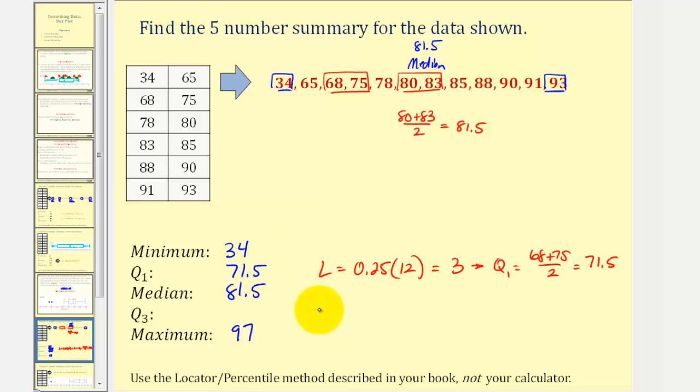And now for Q3, we'll have L equals 0.75 times 12, which is equal to 9. So to find Q3, because L is a whole number, we'll take the average of the values in the ninth and tenth positions, which would be 88 and 90. So Q3 equals 88 plus 90 divided by 2, which is equal to 89.